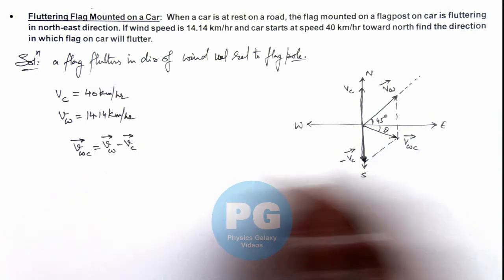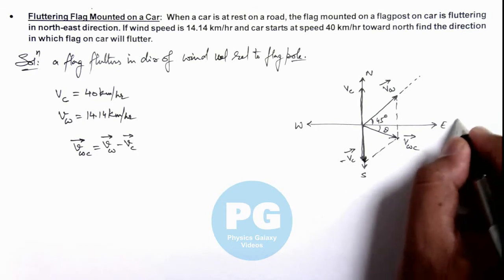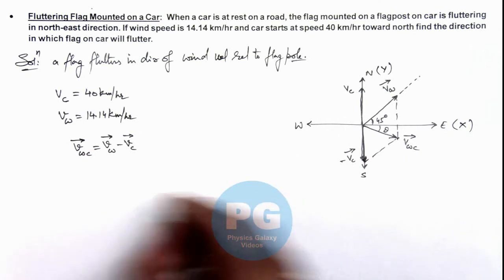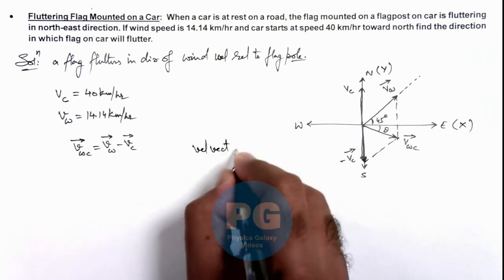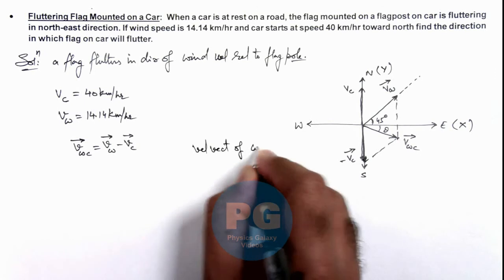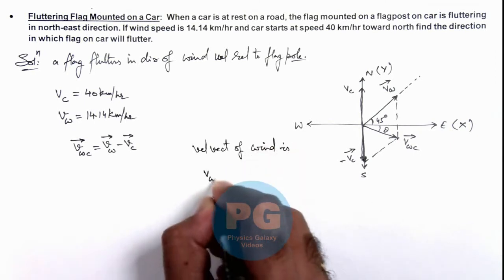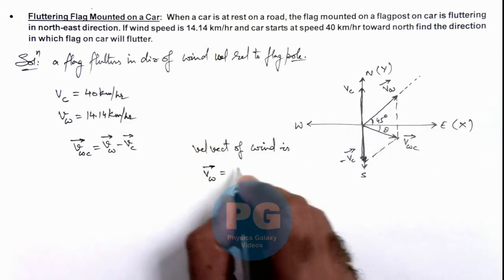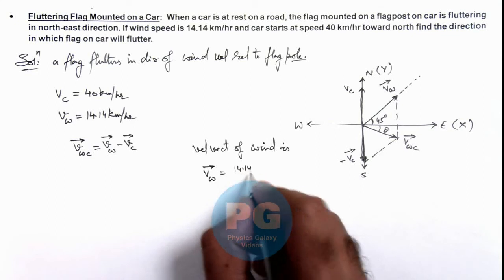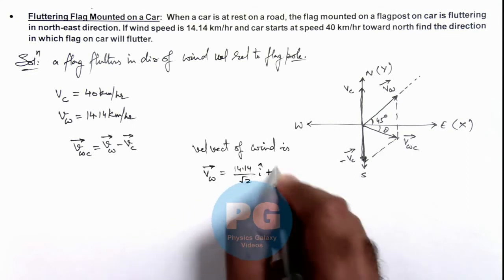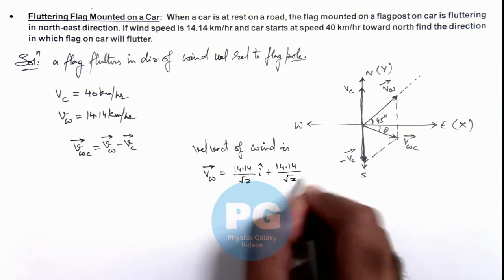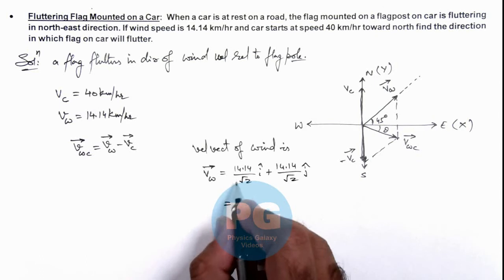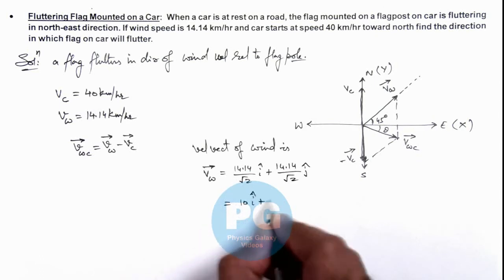Taking east as the x-axis and north as the y-axis, we can write the velocity vector of wind. V_w vector is 14.14 cos45° î + 14.14 sin45° ĵ, which equals 14.14 divided by root 2 î plus 14.14 divided by root 2 ĵ. Since root 2 equals 1.414, this simplifies to 10 î plus 10 ĵ.